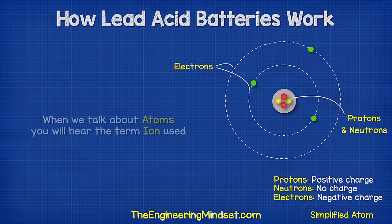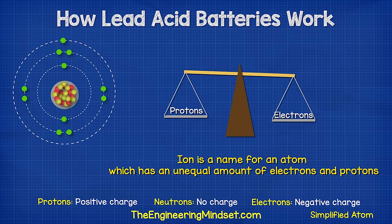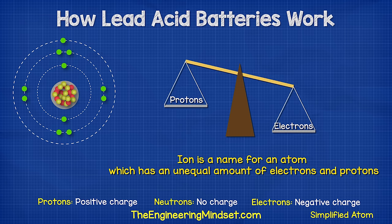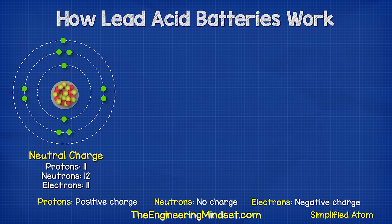When we talk about atoms you'll usually hear the term ion used. An ion is an atom which has an unequal number of protons or electrons. An atom has a neutral charge when it has the same number of protons and electrons, because the protons are positively charged and the electrons are negatively charged, so they balance out.